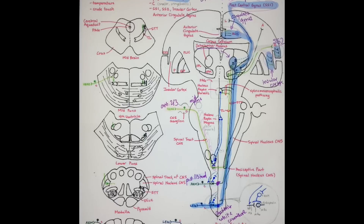That's pretty much the same pathway also for your posterior one-third of the head and your arm: you synapse at your substantia gelatinosa and your marginal nucleus, decussate at your anterior white commissure, go up your spinothalamic tract, synapse at both your VPL and also your intralaminar nucleus, then go through your PLIC, and synapse at a lot of different places: postcentral gyrus, your cingulate gyrus, SS2, and your insular cortex.